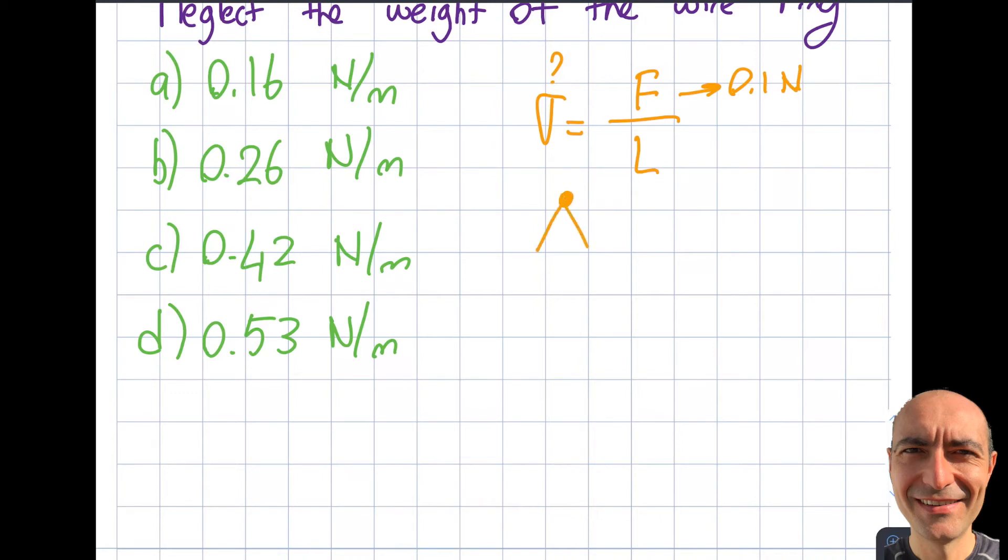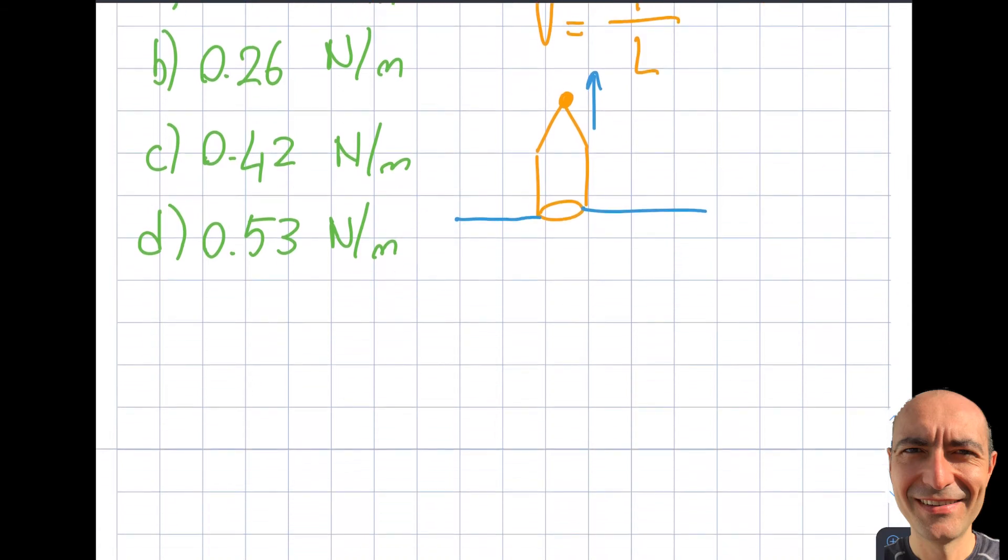What we have is I have something like this, and I have a ring in a three-dimensional shape, and this is the surface of the fluid. If I pull this up, let's look at the free body diagram. This is the force that is given to me. If I look at this shape up here and draw this, what is going on over here?